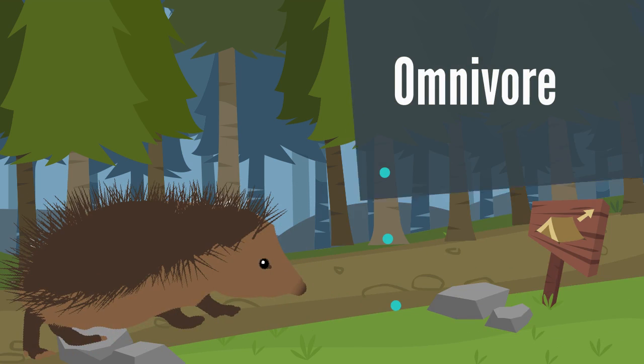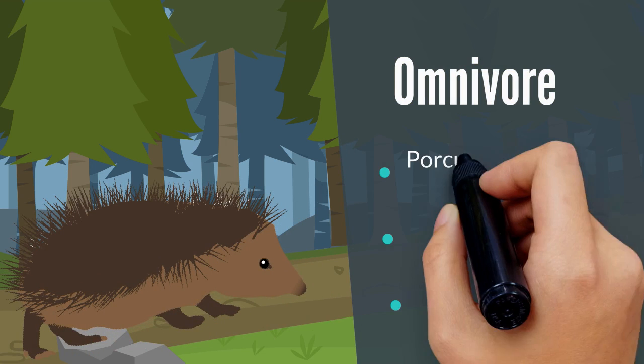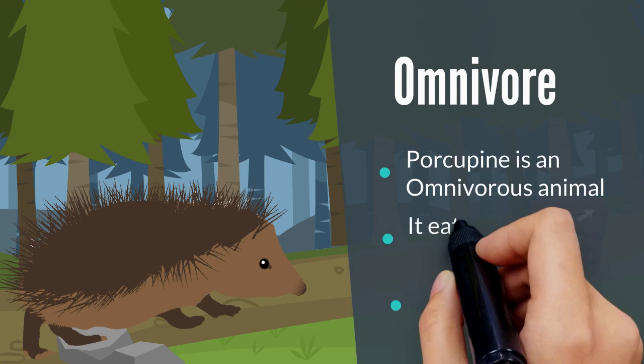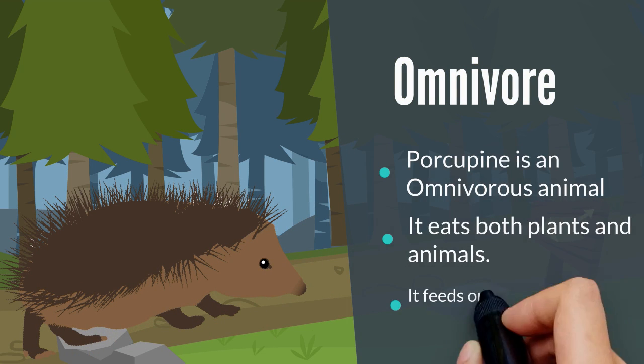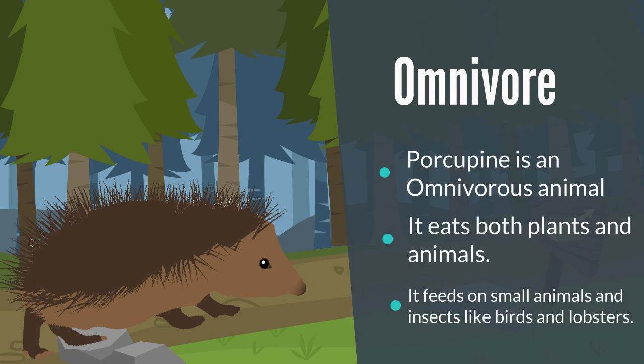Porcupine is an omnivorous animal. It eats both plants and animals and can live in many places. It feeds mainly on small birds and insects.